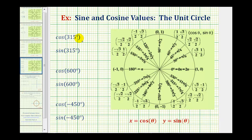We want to determine the exact trig function values using the unit circle. If we sketch the angles in standard position, the point where the terminal side intersects the unit circle gives us both the cosine function value and the sine function value. The x-coordinate is equal to cosine theta, and the y-coordinate is equal to sine theta on the unit circle.